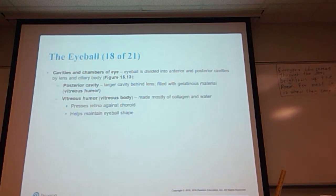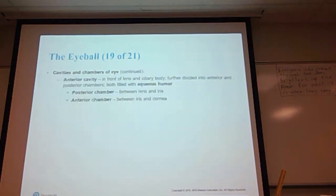The cavities and chambers of the eye: the eyeball is divided into anterior and posterior cavities by the lens and ciliary body. The posterior cavity is the larger of the cavities, found behind the lens, filled with a gelatinous material called the vitreous humor. The vitreous humor is made of mostly collagen and water. It presses the retina against the choroid and helps maintain the shape of the eyeball.